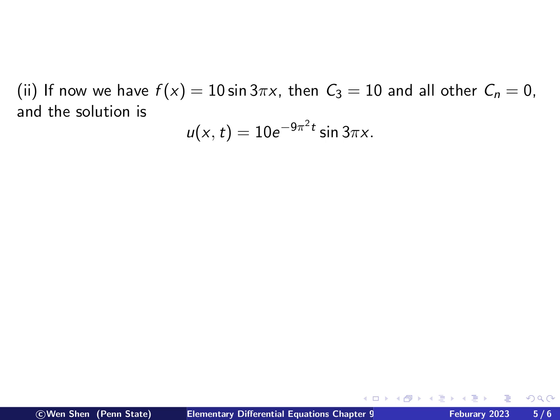Now the second initial condition we consider is 10 times sine 3 pi x. So the amplitude is still 10, but it has a higher frequency for the term n equals 3. So therefore we have c3 is 10, which is just this number, and all the other c's will be 0. So we can put this in the solution, and we find just one term, amplitude 10, e to the negative 3 square pi square of t, and sine 3 pi x.